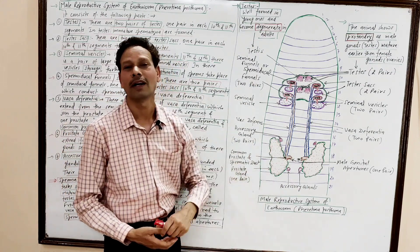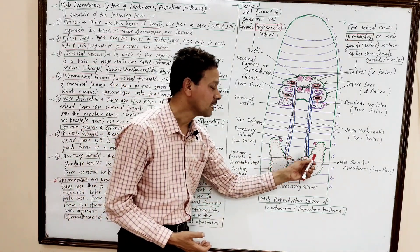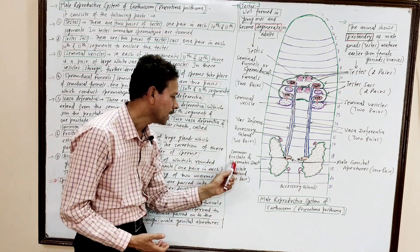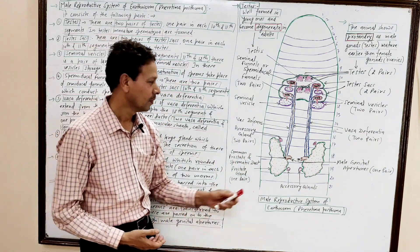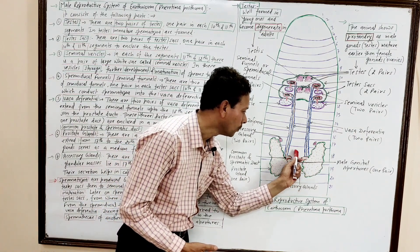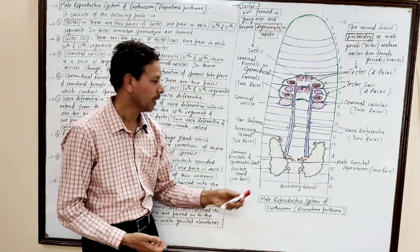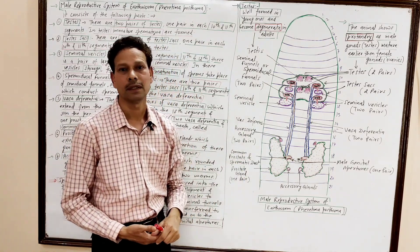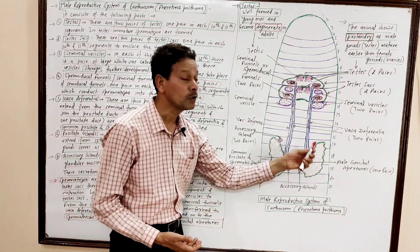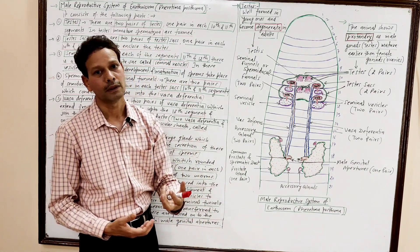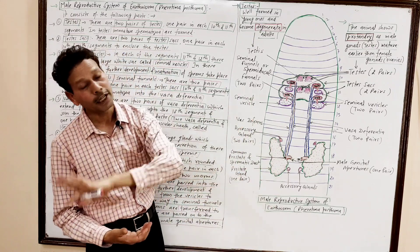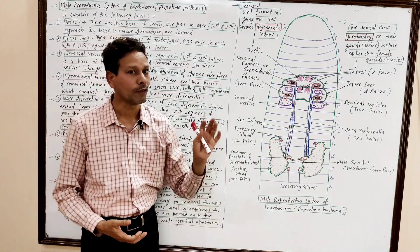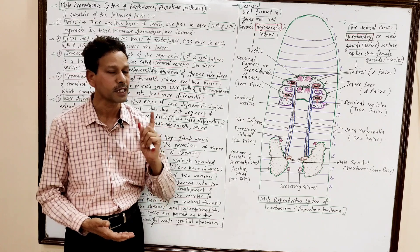Spermatozoa along with prostate secretion are released via the common prostate and spermatic duct. In the mid-ventral part of segment 18, a pair of male genital apertures are present. Through these apertures, sperms and prostate secretion are stored into the spermatheca of another earthworm.